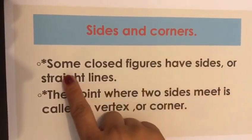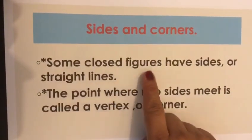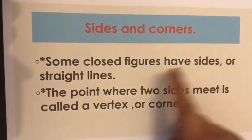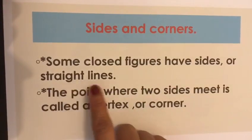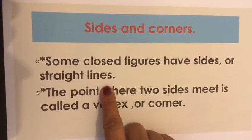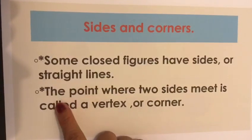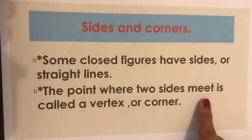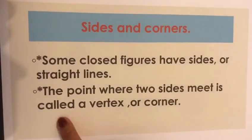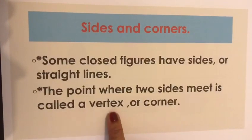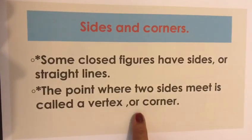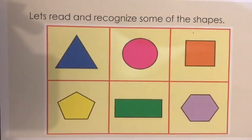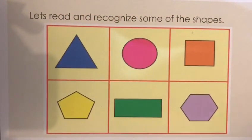Some closed figures have sides or straight lines. The point where two sides meet is called a vertex or corner. Here we have some shapes.